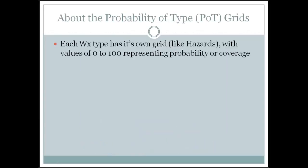About the probability type grids — this will get into some nitty-gritty, but what I want you to realize is that as you get used to the methodology, you almost just don't think about it anymore. The probability type grids are scalar grids with a value of 0 to 100. Each weather type has a grid — similar to how you do hazards with separate hazard grids that you then merge together — so you can manipulate these grids in an easier format.